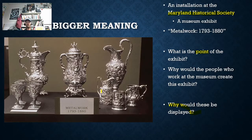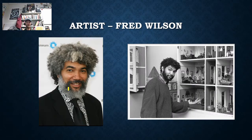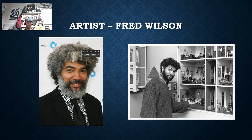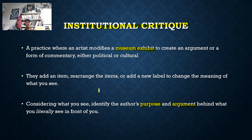The thing to keep in mind with a museum is that oftentimes they don't show you everything they have in their collection — they'll bring out certain things at a time. The Maryland Historical Society allowed this artist, Fred Wilson, to go through this practice of institutional critique. He created a new exhibit using their items to add to a message, to create a new message in how he rearranges the items and how they were displayed.